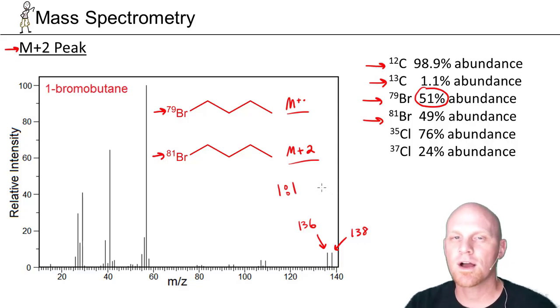Normally you're not going to see an M+2 peak, but if you see one and it's in a 1 to 1 ratio, dead giveaway you've got a bromine.